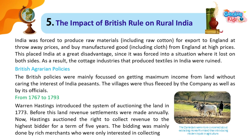India was forced to produce raw materials, including raw cotton, for export to England at throwaway prices, and to buy manufactured goods, including cloth, from England at high prices. This placed India at a great disadvantage, since it lost on both sides. As a result, the cottage industries that produced textiles in India were ruined.